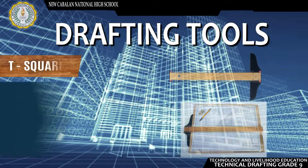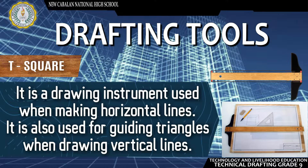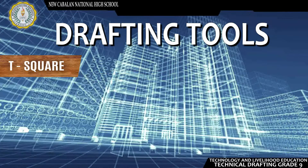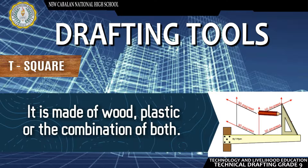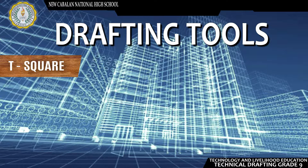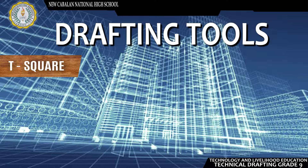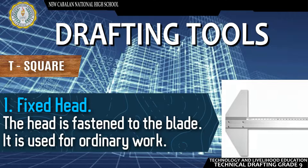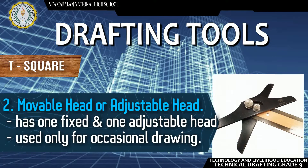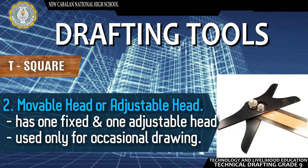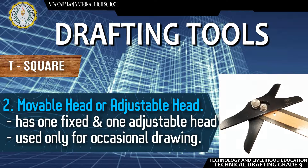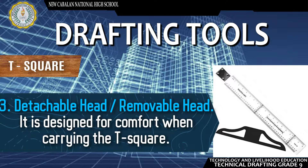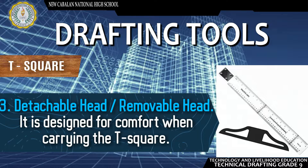T-square — It is a drawing instrument used when making horizontal lines. It is also used for guiding triangles when drawing vertical lines. It is made of wood, plastic, or a combination of both. There are three types of T-square: Fixed Head — the head is fixed into the blade, used for ordinary work; Moveable or Adjustable Head — has one fixed and one adjustable head, used only for occasional drawing; Detachable or Removable Head — designed for comfort when carrying the T-square.